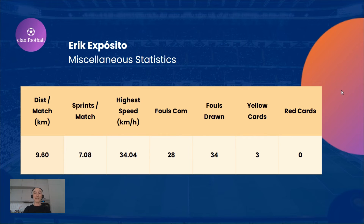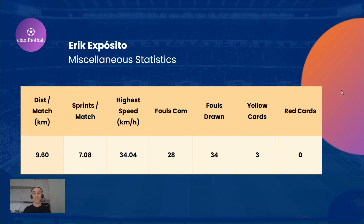Jumping to other statistics, we may notice that he covers almost 10 kilometers per match, makes 7 sprints per match, and is quite fast — his highest recorded speed was a bit above 34 kilometers per hour. He had three yellow cards, which is not that much given he played 12 games.